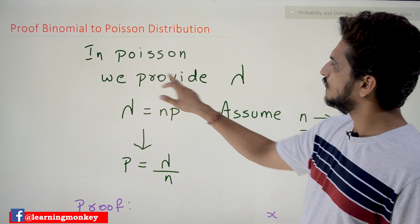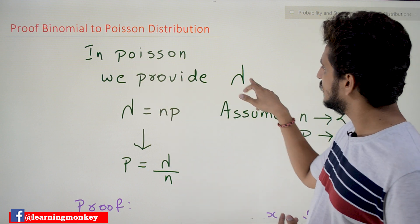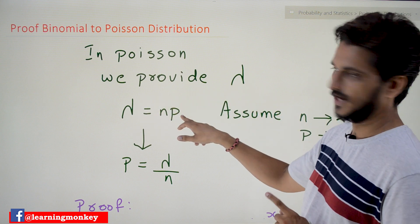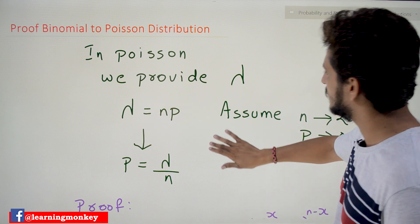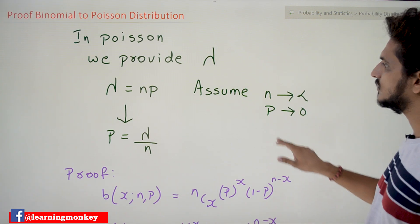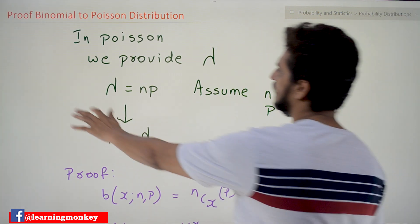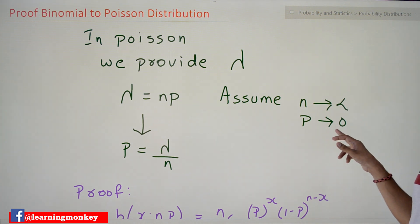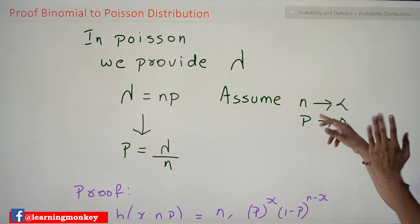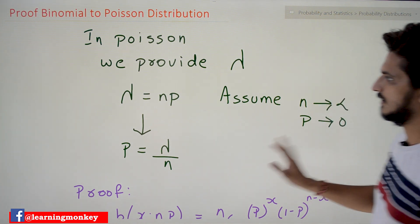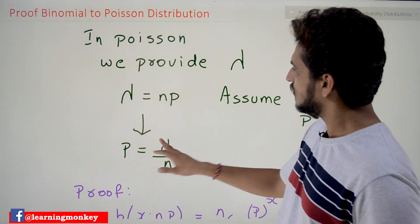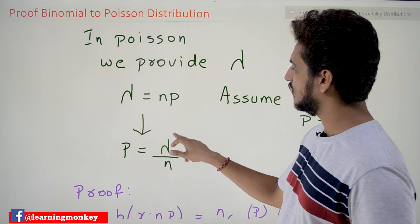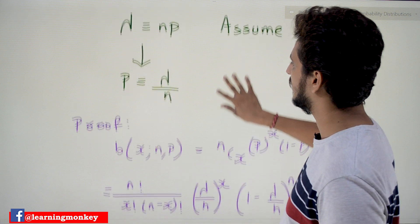In Poisson's distribution, the lambda value — the rate value — is given as lambda = NP. Our assumption here is n tends to infinity and p tends to 0; we will understand why in our next class. Based on this assumption, p can be written as p = λ/n.